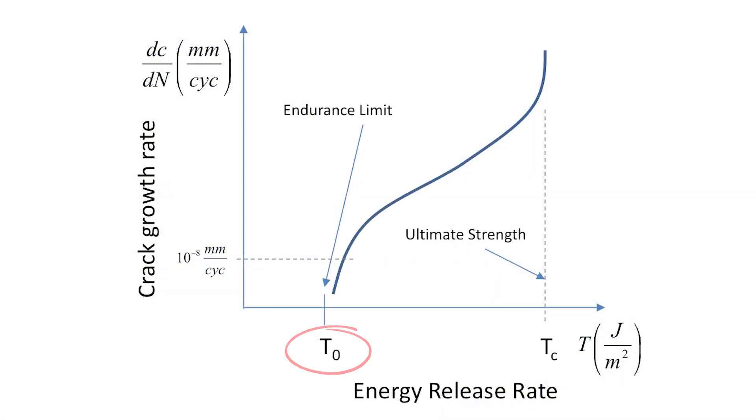It's also called the endurance limit or the fatigue threshold because if you keep dynamic loads below this limit, then polymer chains don't have enough energy to break and a crack just won't grow, even if you cycle the load forever.